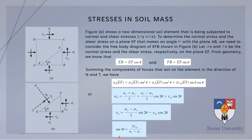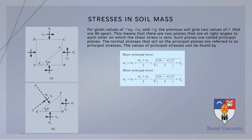These formulas can be used later in problems related to the determination of normal stress and shear stress of a soil element. For the given values of tau-sub-xy (the shear stress) and sigma-y and sigma-x (the normal stresses), the previous equations will give two values of theta that are 90 degrees apart.